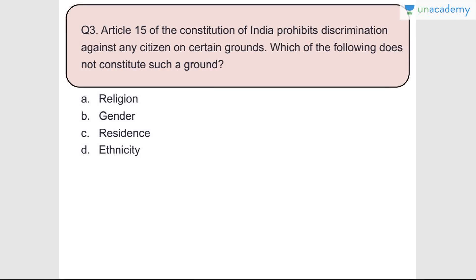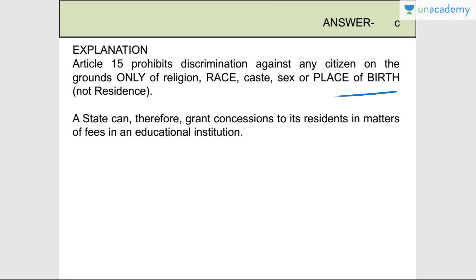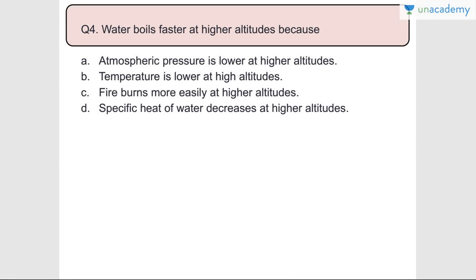Question number three: Article 15 of the Constitution of India prohibits discrimination against any citizen on certain grounds. Which of the following does not constitute such a ground? Religion, gender, and ethnicity are grounds, but residence is not. Article 15 prohibits discrimination only on grounds of religion, race, caste, sex, or place of birth - but not residence. A state can therefore grant concessions to its residents in matters of fees in educational institutions.